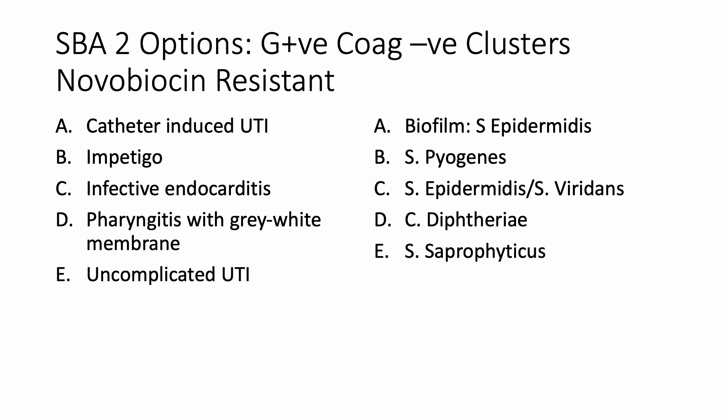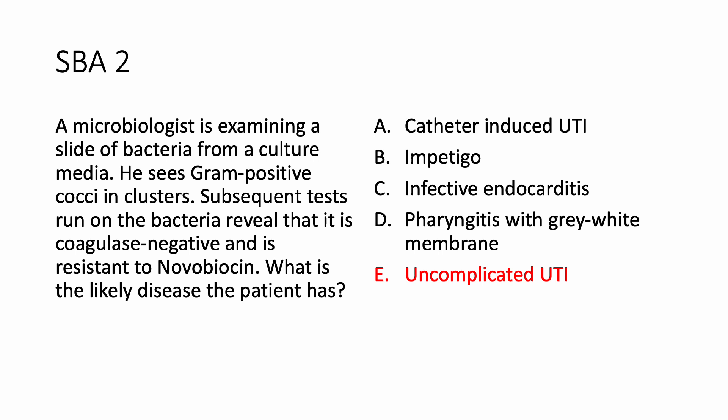Going through the options: catheter-induced UTI is caused by Staph epidermidis via biofilm production. Impetigo is caused by Strep pyogenes. Infective endocarditis on prosthetic valves is Staph epidermidis; on normal valves it is Strep viridans. Pharyngitis with grey-white membrane is Corynebacterium diphtheriae. Uncomplicated UTI in a female is Staph saprophyticus, which is novobiocin-resistant. So the correct answer is uncomplicated UTI.